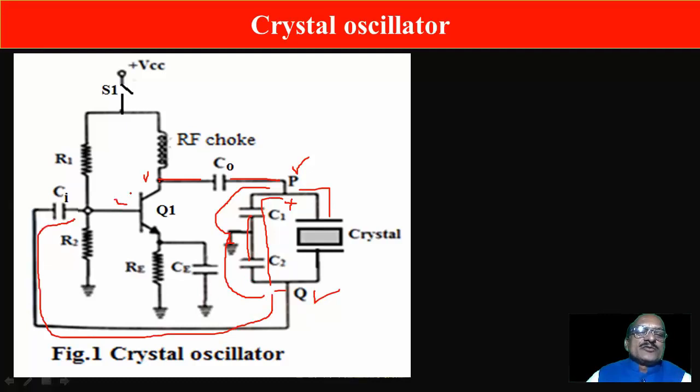The transistor produces a phase difference of 180 degrees. So total phase difference produced in this loop is 360 degrees or zero degrees, and thus there exists a positive feedback.